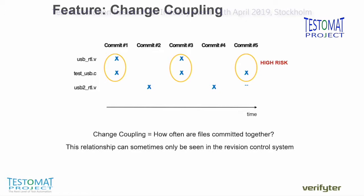There are also some more esoteric features that we have, like change coupling. In a revision control system you can see which files are committed together — they might not have a logical connection, but in Git or Perforce you can find out. We've noticed that in some cases, when a file is consistently updated together with many others and then suddenly it's not, you can look at other parameters as well to identify if it was a high-risk commit or not.